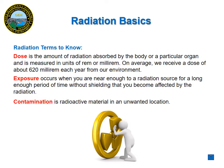Along with measurement terms, there are also radiation terms you will need to remember. Dose is the amount of radiation actually absorbed by your body and is measured in rem or millirem. Each year we receive a dose of about 620 millirem just from our surrounding environment. Exposure is when you are close enough to a radiation source for an extended period of time that the radiation actually begins to affect you. Contamination is any radioactive material in an unwanted place.